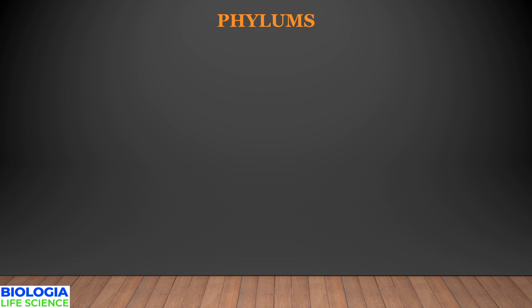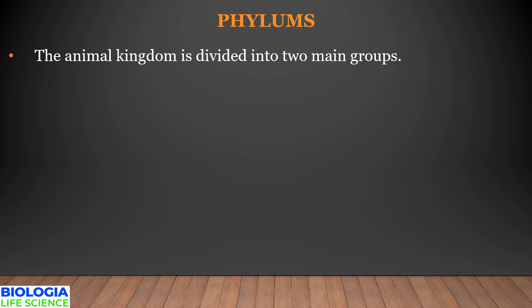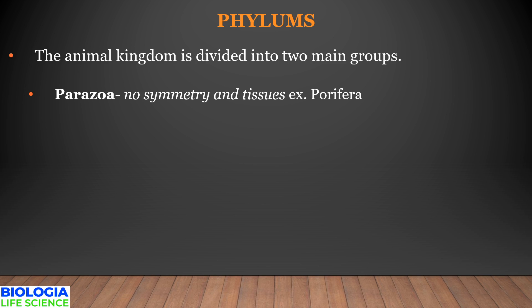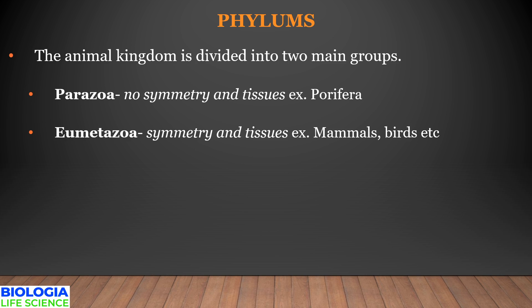Kingdom Animalia, being the largest, is divided into two main groups or sub-kingdoms. However, there is disagreement among scientists regarding these sub-kingdoms. The sub-kingdoms are Parazoa and Eumetazoa. Parazoa are organisms that do not show any symmetry and have cellular level of body organization — for example, Porifera like sponges. Eumetazoa have organisms which show symmetry and have tissue, organ, or organ system level of organization — for example, mammals, birds, etc.